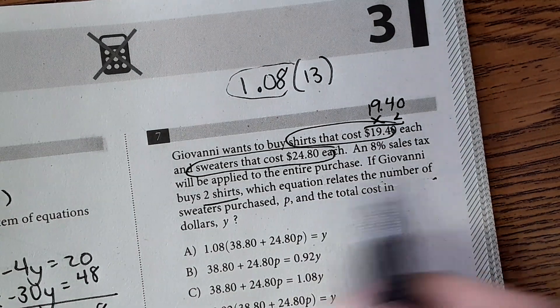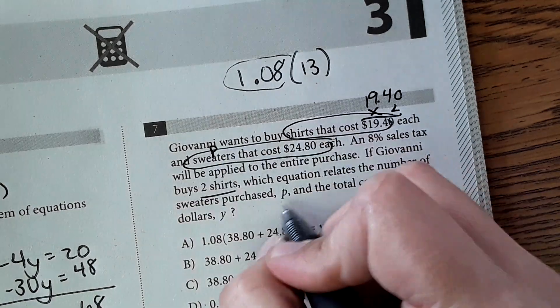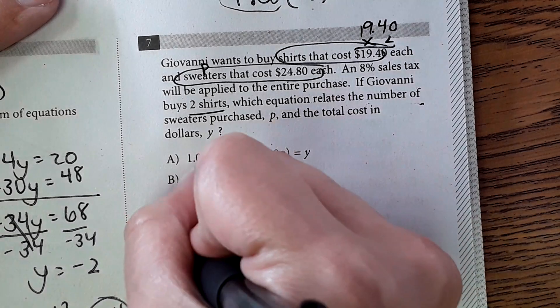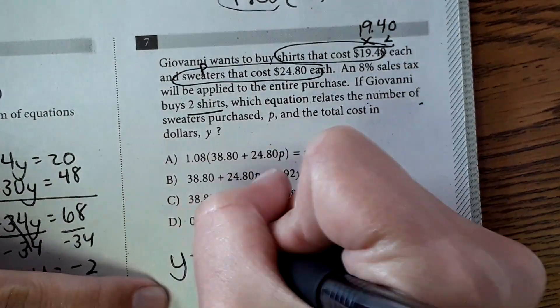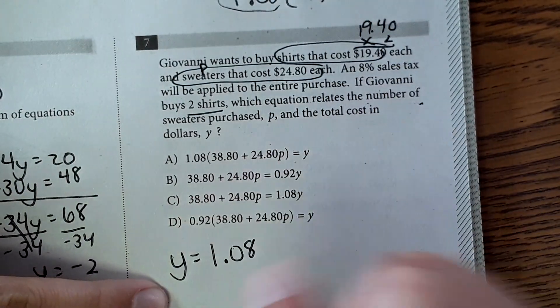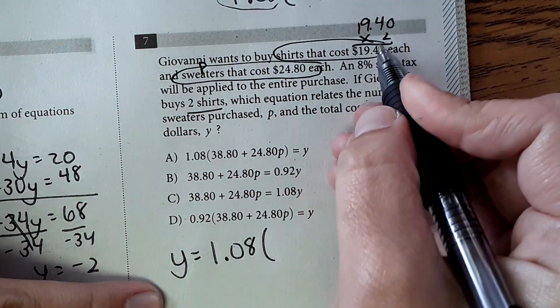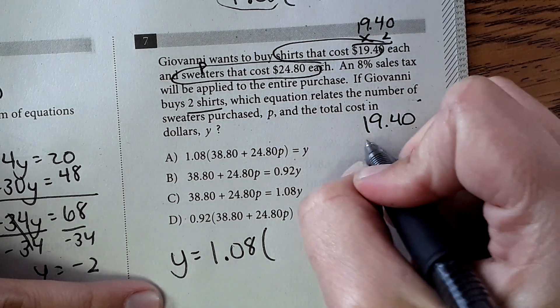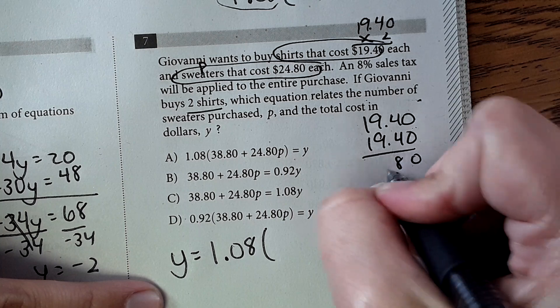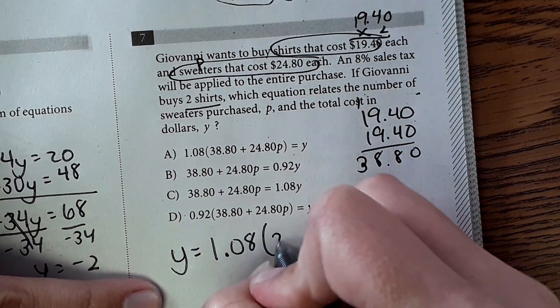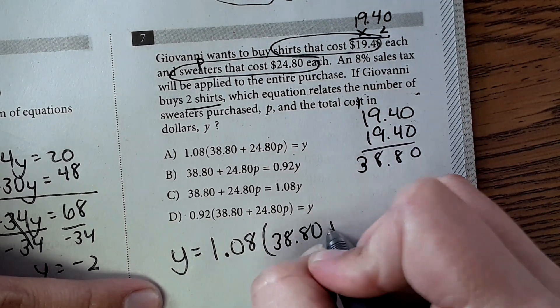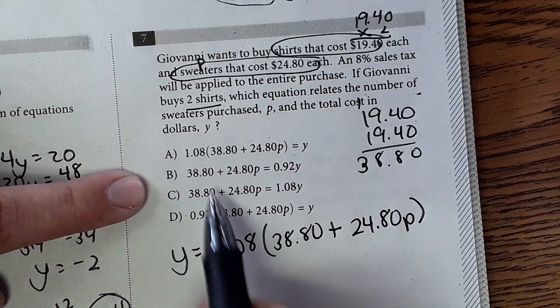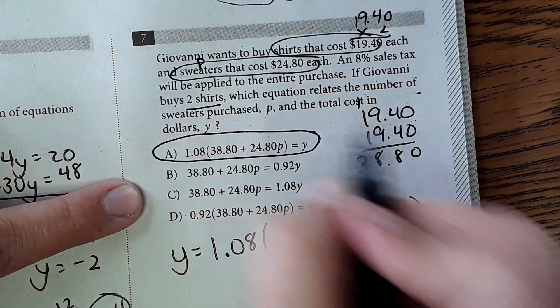So keep that in mind. Now we will look further into this. If Giovanni buys two shirts, so two shirts at $19.40, so $19.40 times 2, which equation relates to the number of sweaters purchased P? Sweaters will be P. And the total cost in dollars Y. Okay, now setting this up, total cost is Y. It's going to be 1.08 sales tax times the entire thing, so we'll use parentheses. We have two shirts at $19.40. Now you can't use a calculator on this section, so you can either take this times it by 2 or add two $19.40s together. And I get $38.80. So $38.80 for the shirts, plus the cost of the sweaters, $24.80 each, and sweaters is P. So now when I look up here, this is what I'm looking for, and it looks like it is answer A.